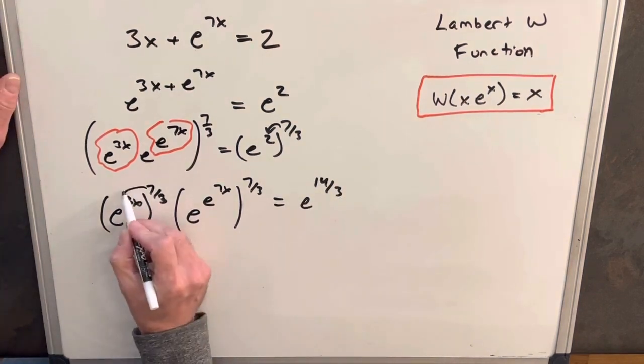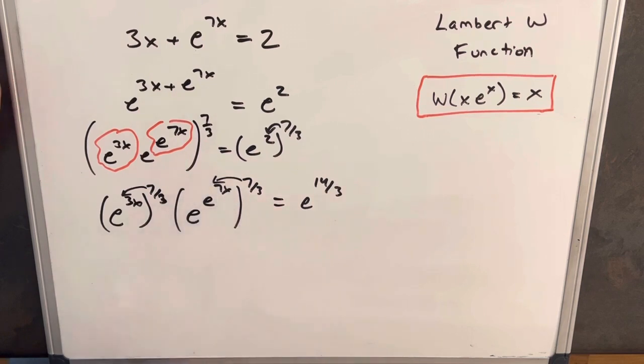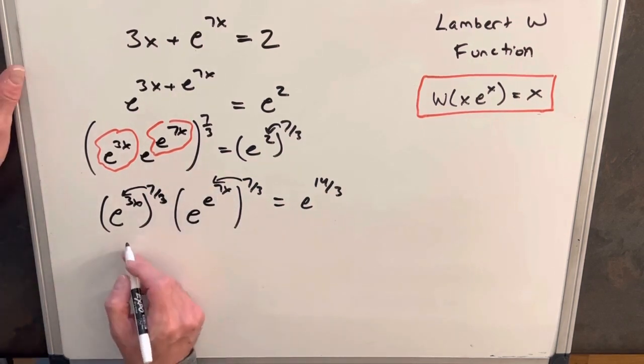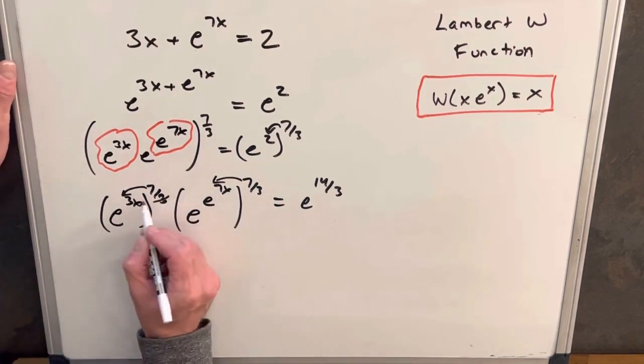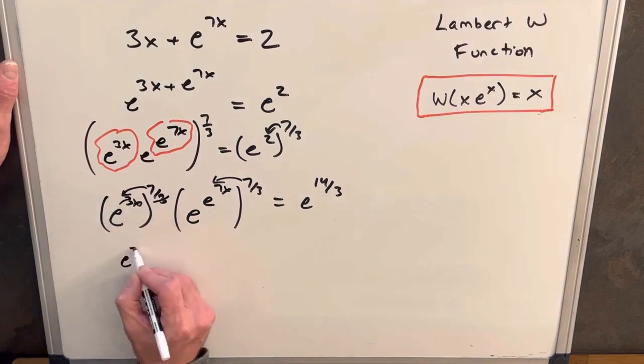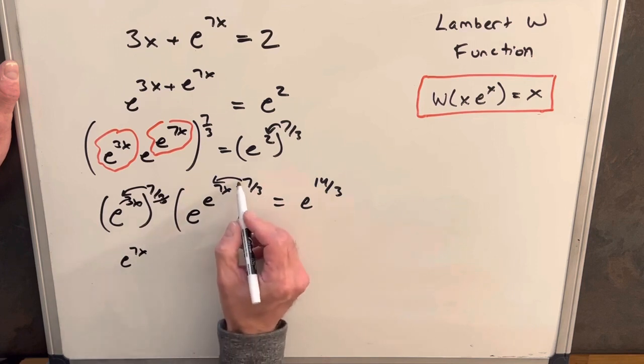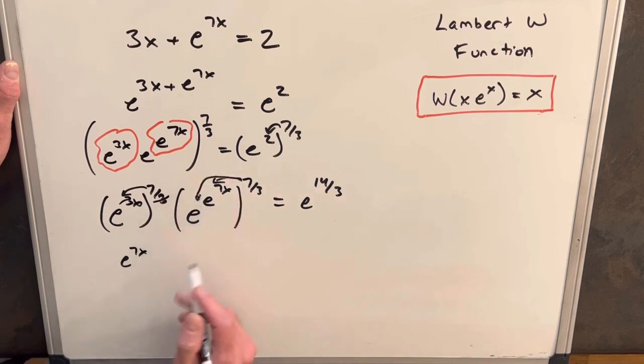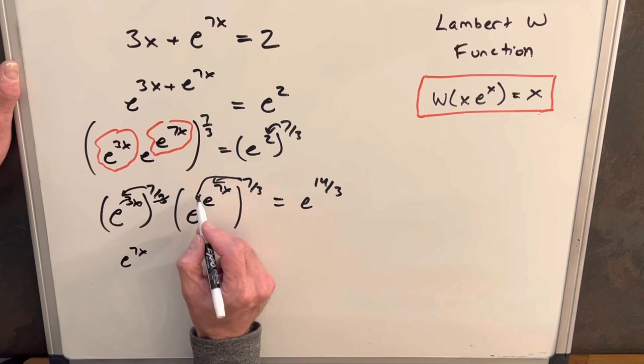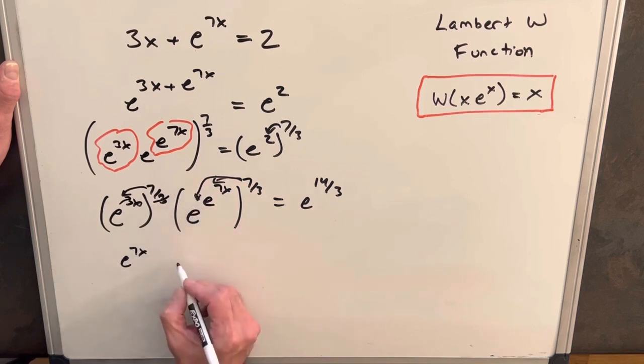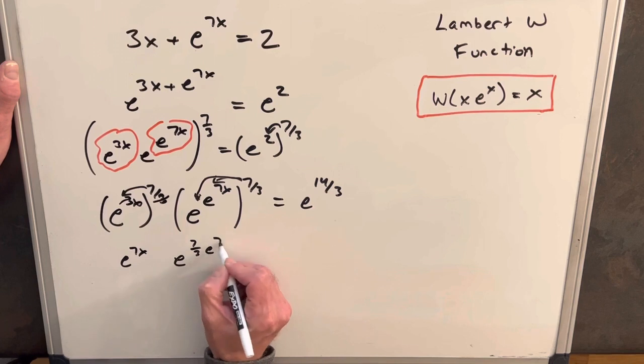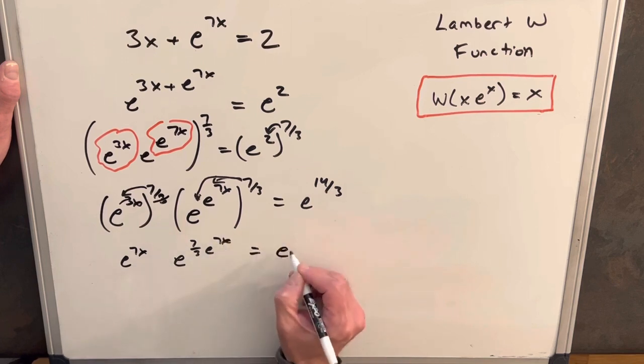Then left side we'll do the same thing. We'll multiply this exponent inside. So for this first term the 3s are going to cancel and we're going to have e to the 7x which is what we want because we were aiming for that. And then here this is going to go all the way to the front. We can't multiply it on here. We have to multiply it here. So this is going to be e to the 7 thirds e to the 7x equals e to the 14 thirds.